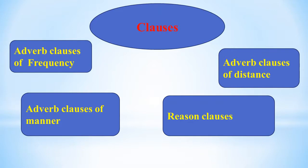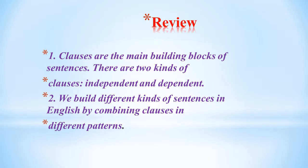To summarize: clauses are the main building blocks of sentences. There are two kinds of clauses — independent and dependent. An independent clause expresses a complete thought and can be a sentence by itself. A dependent clause begins with a subordinator and cannot be a sentence by itself. Dependent clauses are one of three types: adverb, adjective, or noun.